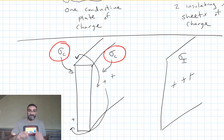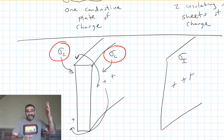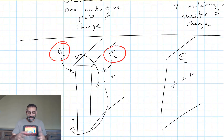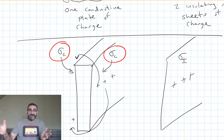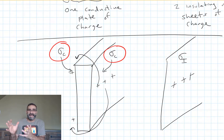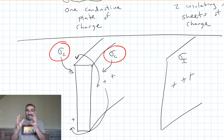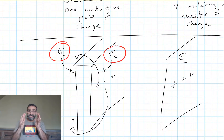I have an infinitely large flat conductive plate with charge density sigma_c when no other charges are present. I also have an infinite insulating sheet with charge density sigma_i. Sigma insulator won't change — it's an insulator; those charges can't move. But the sigma_c values on the conductive plate will change when I bring another charge next to it. Charges will move and redistribute.